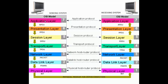Coming to the transport layer, the data is sent there and divided into segments. Those segments are sent to the network layer, where an IP address is added to each segment, converting it into a packet. The network layer then sends the packet to the data link layer, where a MAC address is added to the packet, converting it into a frame.